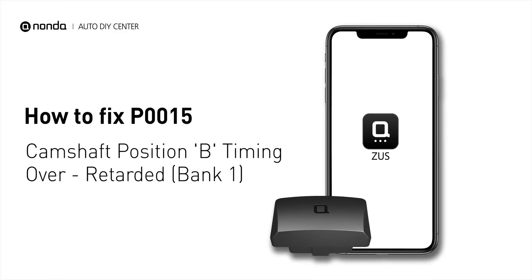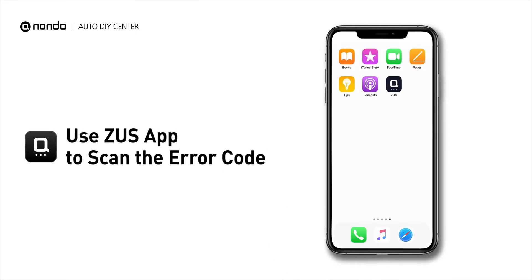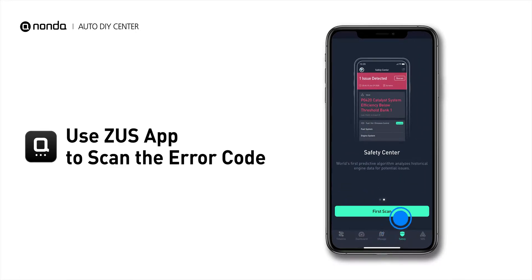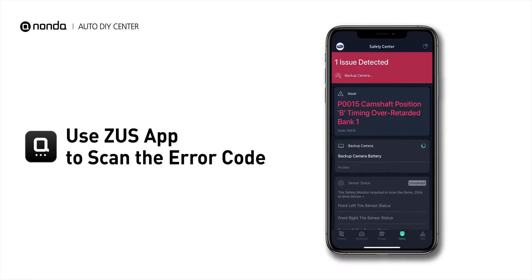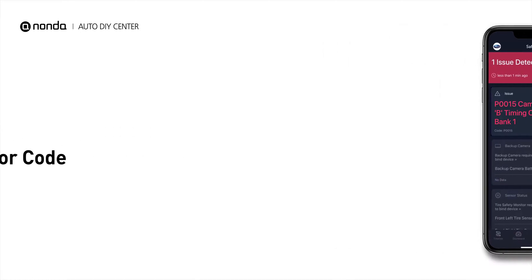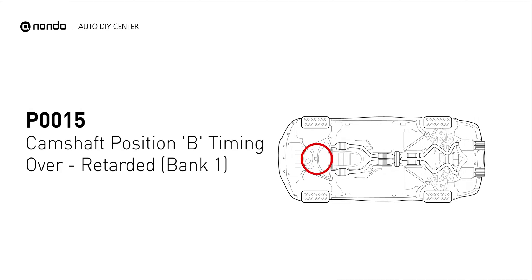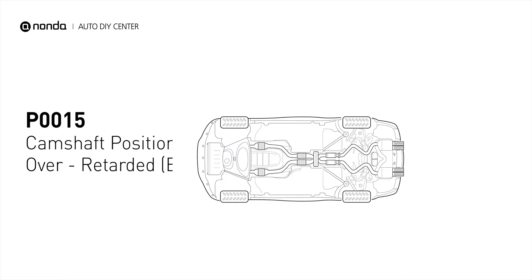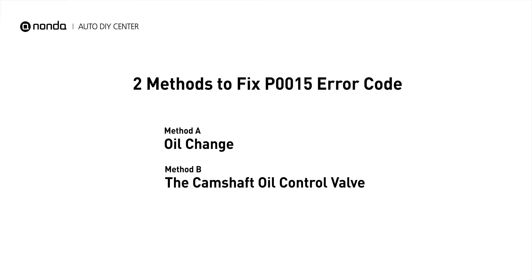If you are getting a P0015 error code, this video is going to show you two practical solutions to fix the error code at home. Use the Zeus app to scan your vehicle and see the error code P0015. It indicates the ECM has determined that the intake camshaft timing for Bank 1 is more retarded than what the ECM has commanded it to be. Here are two simple DIY methods you can try to solve this problem.